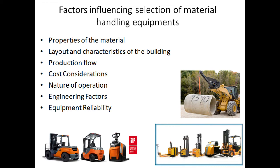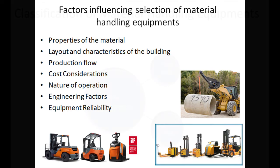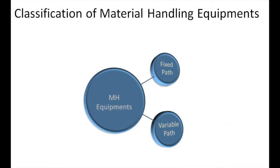Material handling equipment can be broadly classified into two categories: fixed path and variable path equipment. Fixed path equipment moves in a fixed path — conveyors, monorail devices, chutes, and pulley-driven equipment belong to this category. A slight variation is provided by overhead cranes, which though restricted, can move materials within a restricted area. Overhead cranes have a very good range in terms of hauling tonnage and are used for handling bulky raw materials, stacking, and at times palletizing.